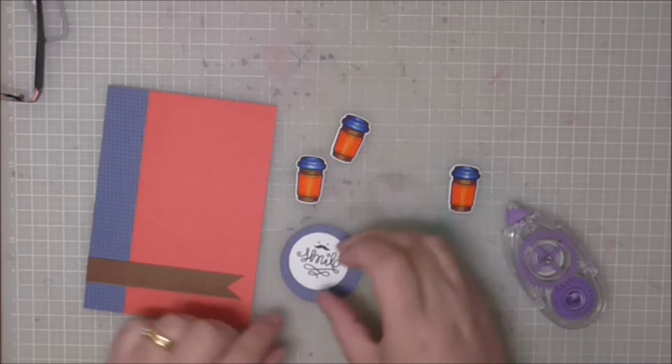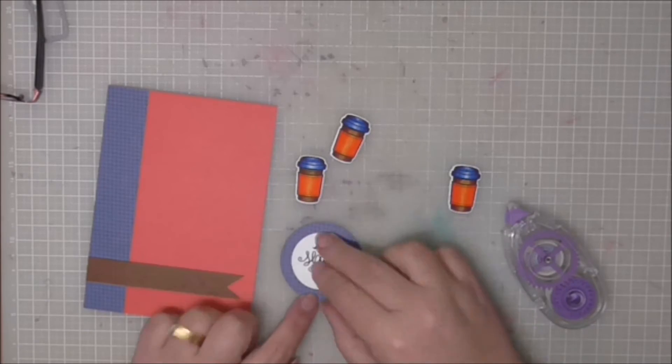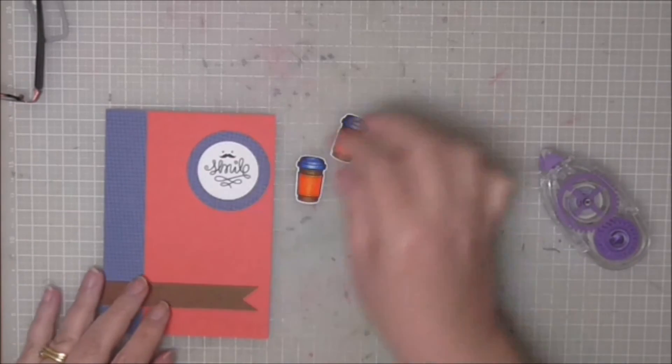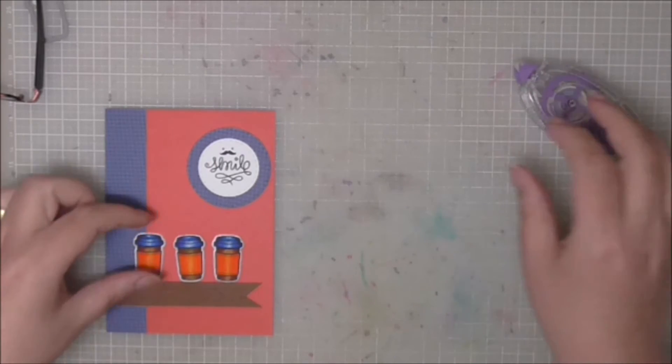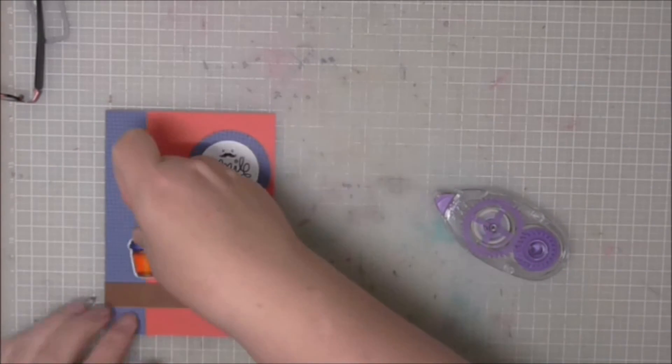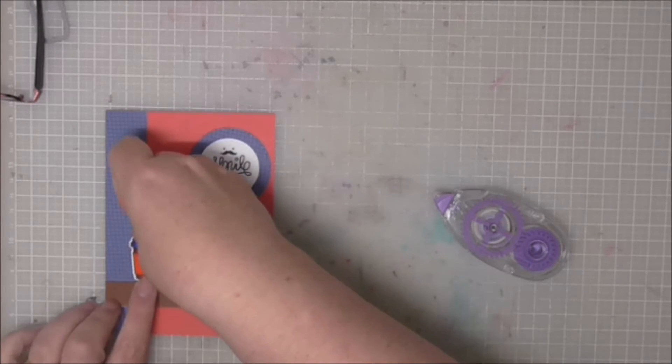a little double sided tape on the back of the greeting which is going to go on the back or onto the center of our mat and the coffee cups, I wanted to get them straight before I stuck them on, make sure they were kind of evenly spaced, simple adhesive to pop those on as well, very, very easy.